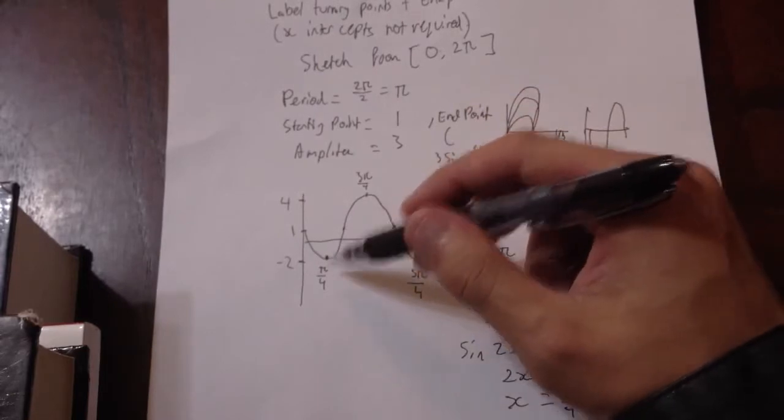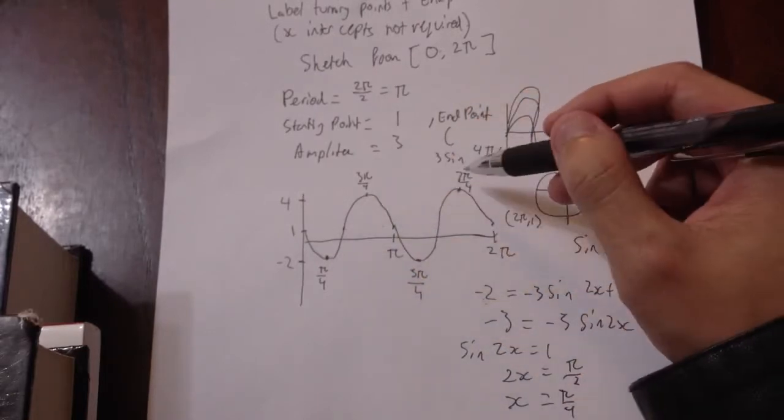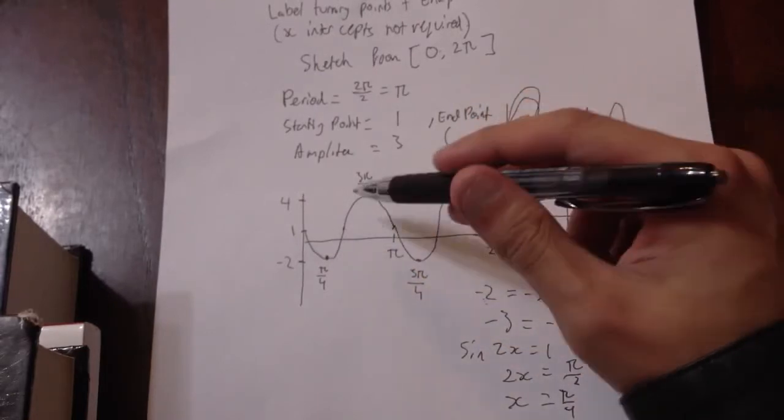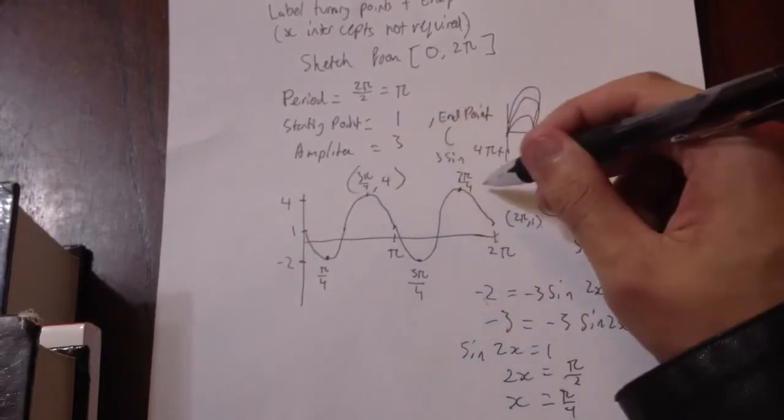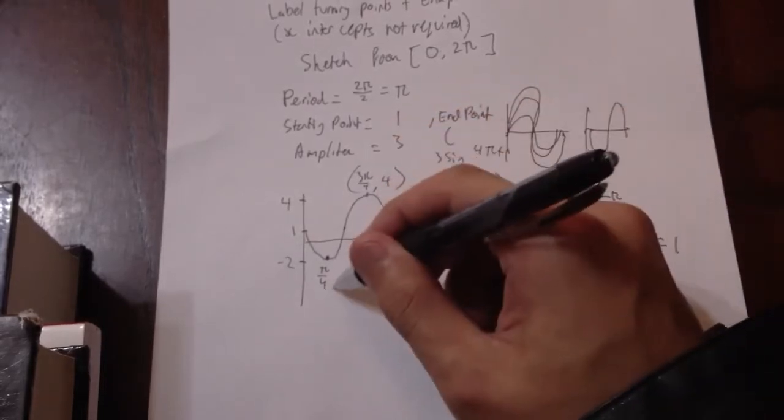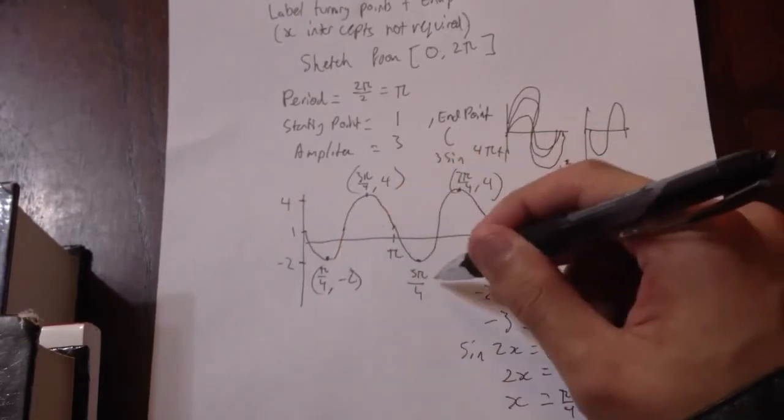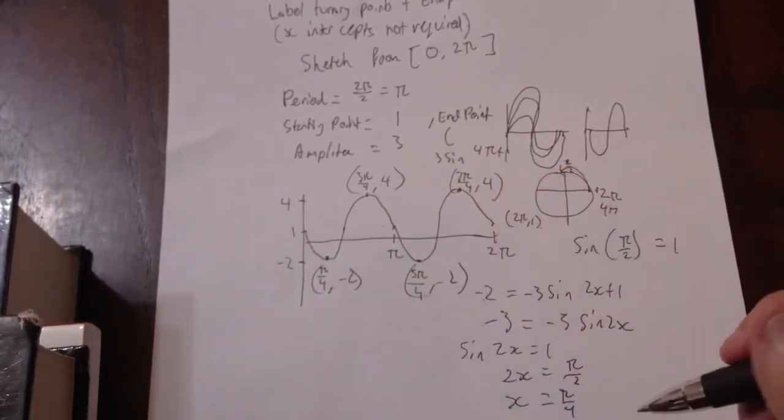So there's a quick proof, but you don't need that. Anyway, this becomes π on 4, 3π on 4, 5π on 4, 7π on 4. And let's put 4, 4, 4, minus 2, minus 2. There's our graph.